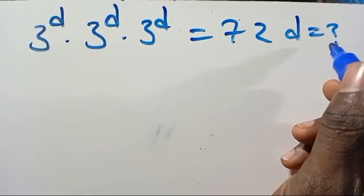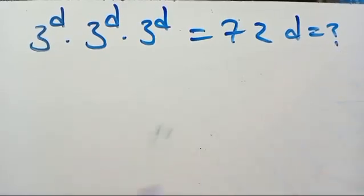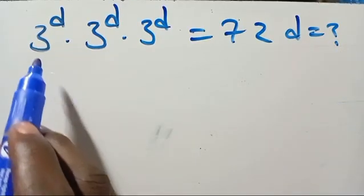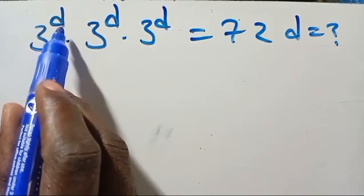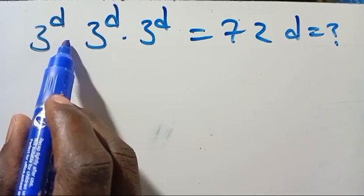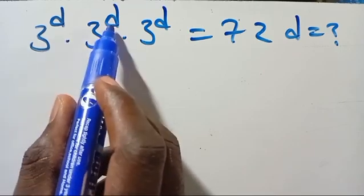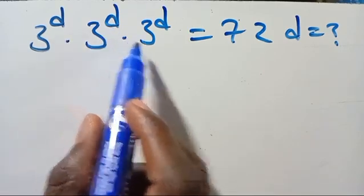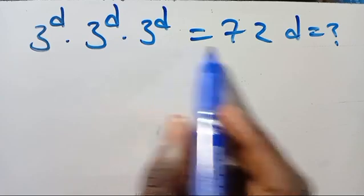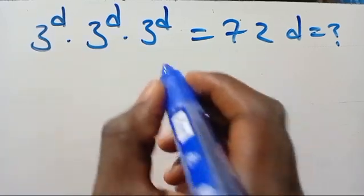What is the value of D? Given that 3 to the power of D multiplied by 3 to the power of D multiplied by 3 to the power of D equals 72.